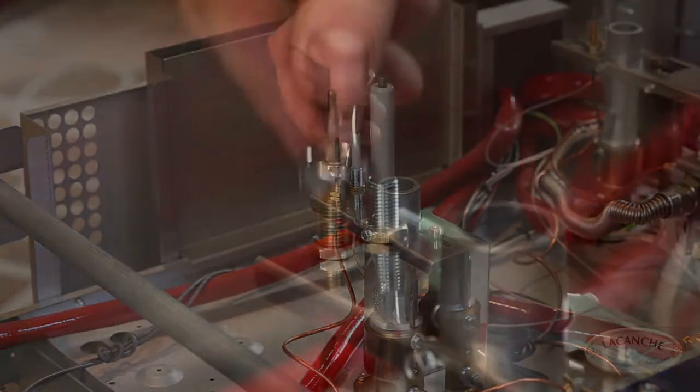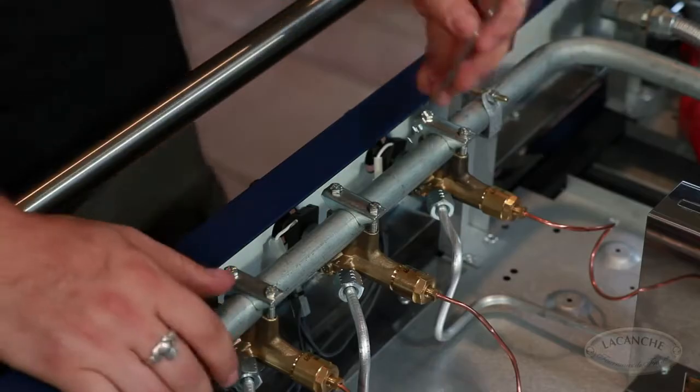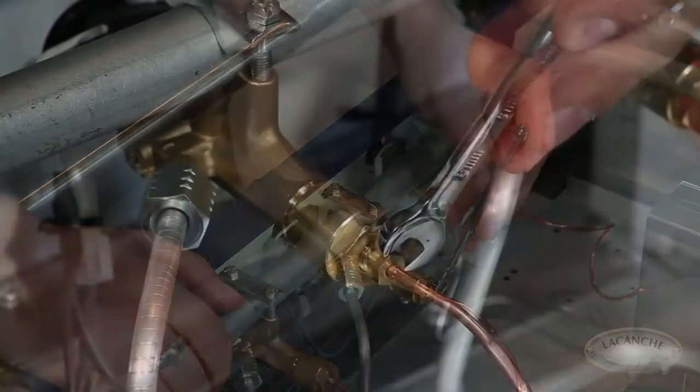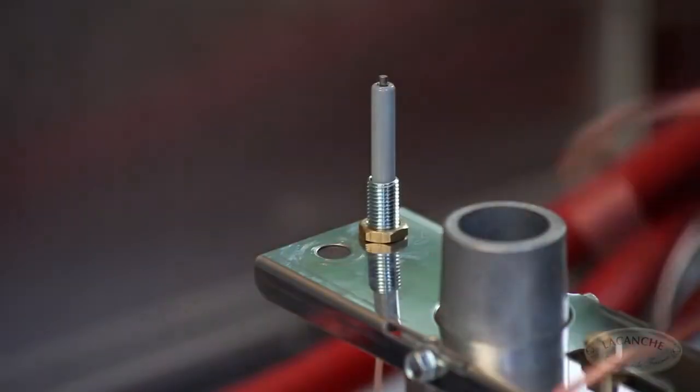Loosen and remove the nut using the 11mm wrench. Loosen and remove the thermocouple wire nut with the 8mm wrench. The thermocouple probe and lead are now free to remove from the range.